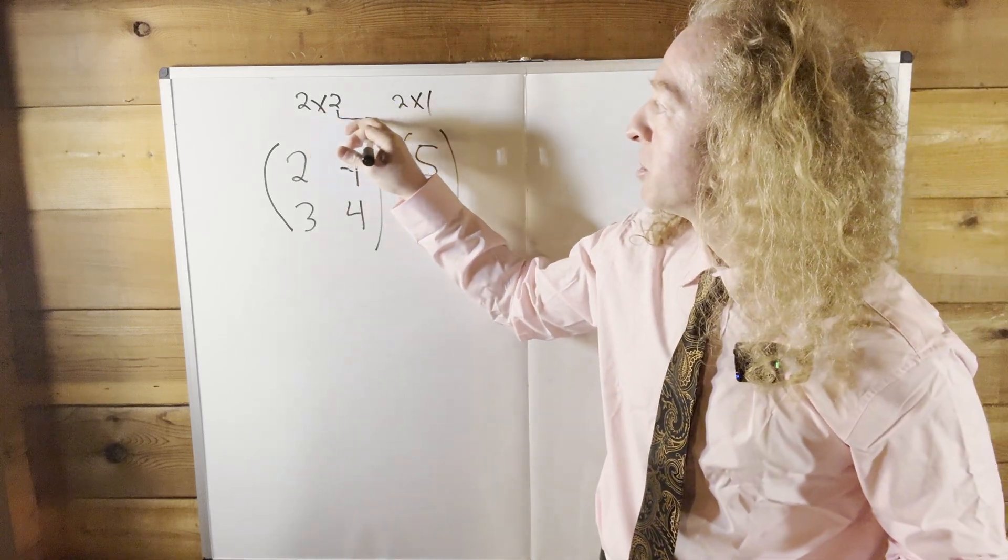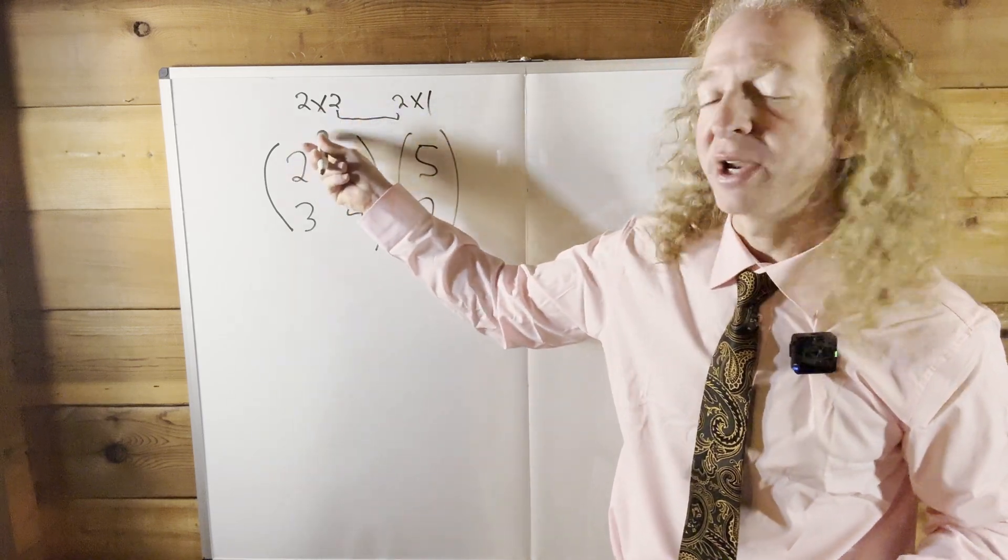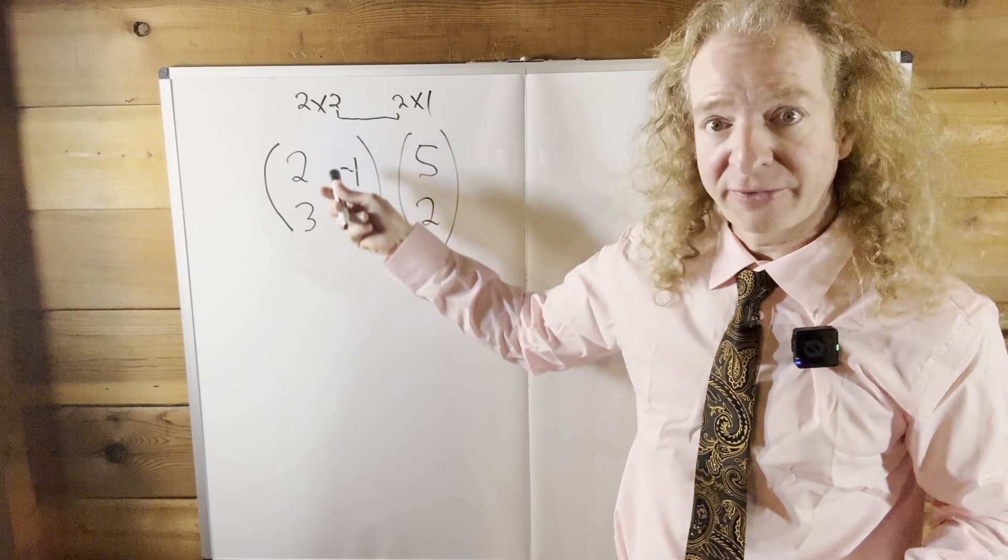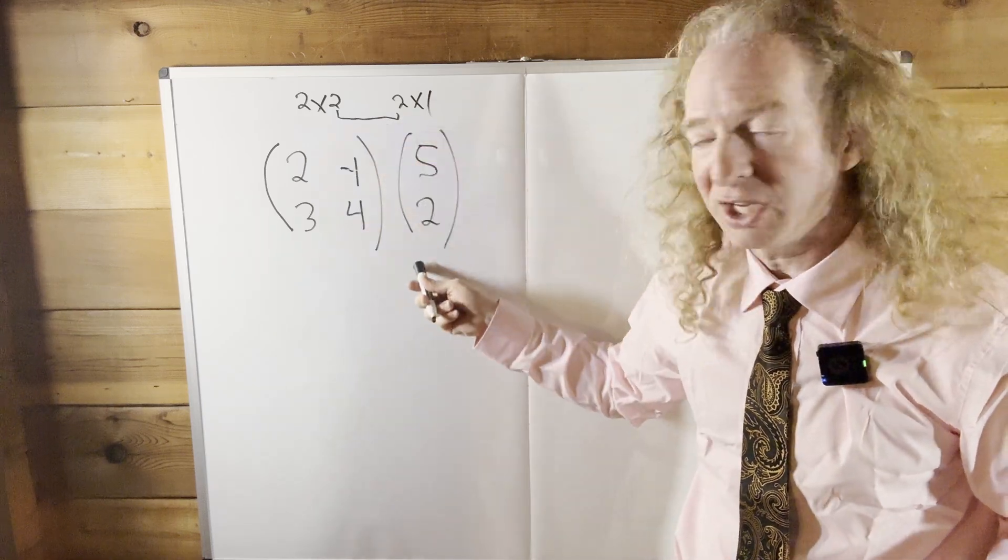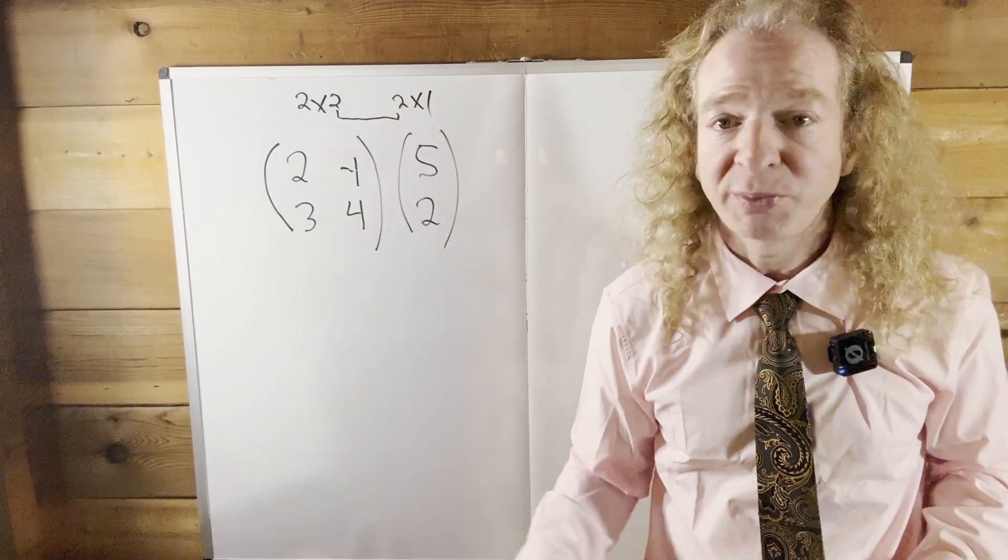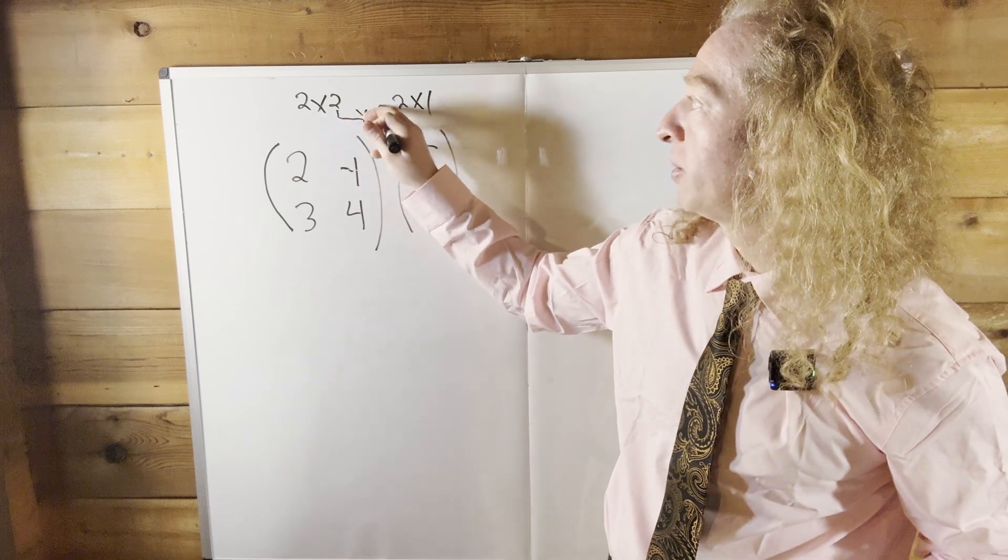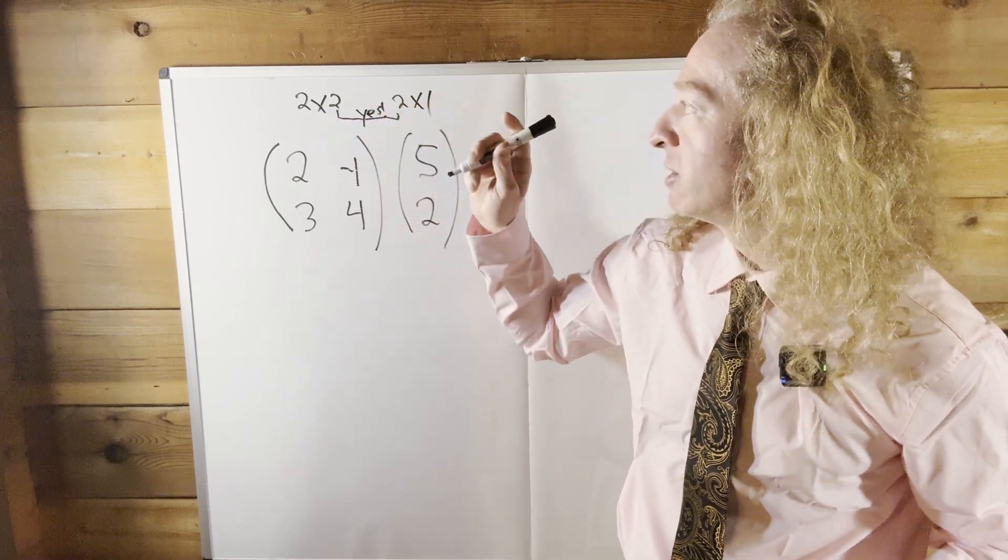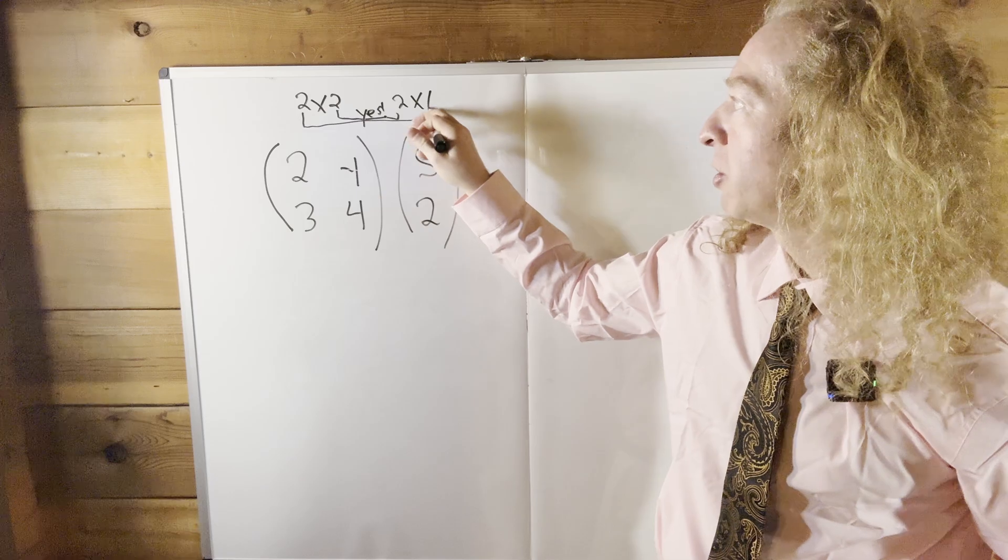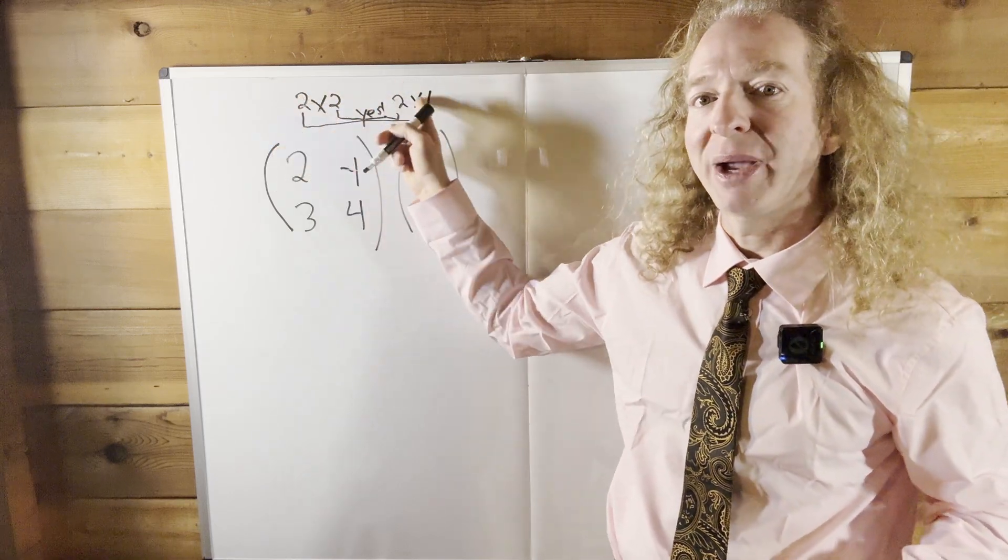Now whenever these inside numbers match like this, in other words, whenever the columns of the first matrix are equal to the rows of the second matrix, then we can multiply. So the answer is yes, we can multiply. And the dimension of the resulting matrix is going to be the outer numbers, so the resulting matrix is going to be a two by one.